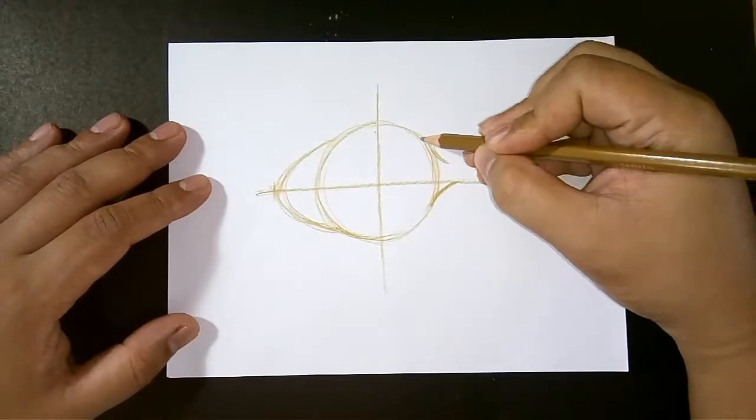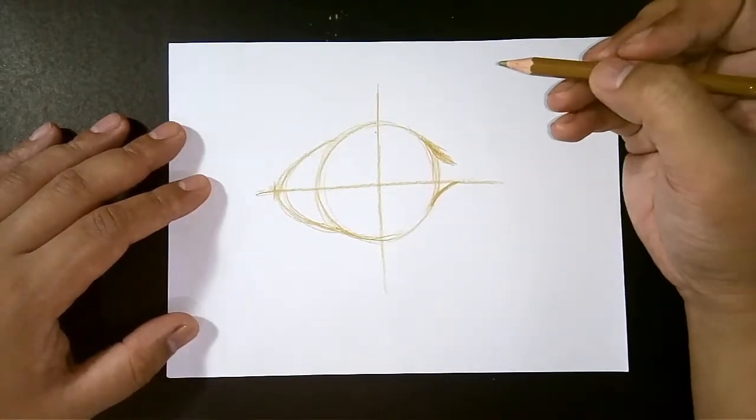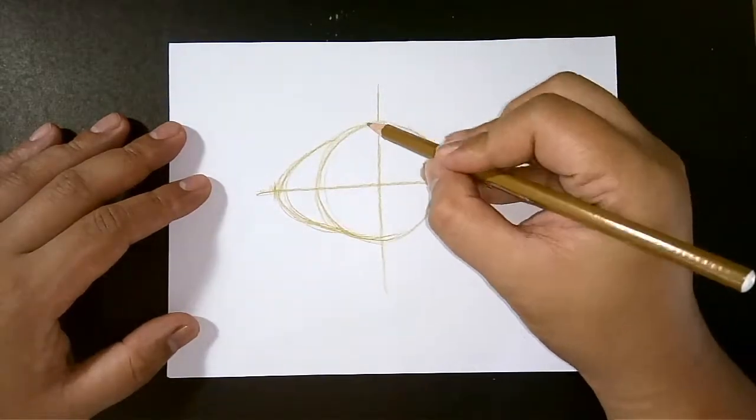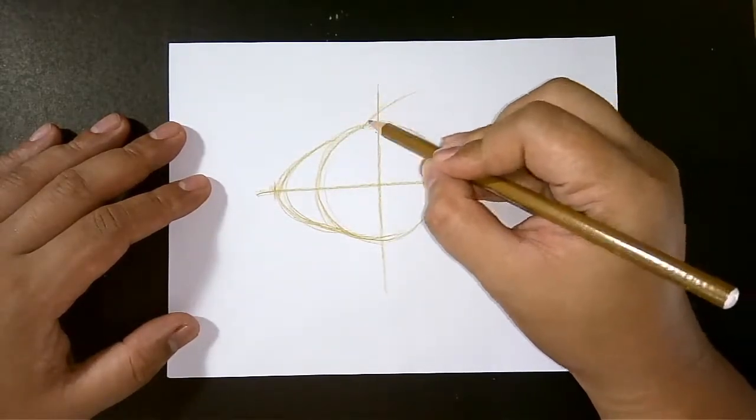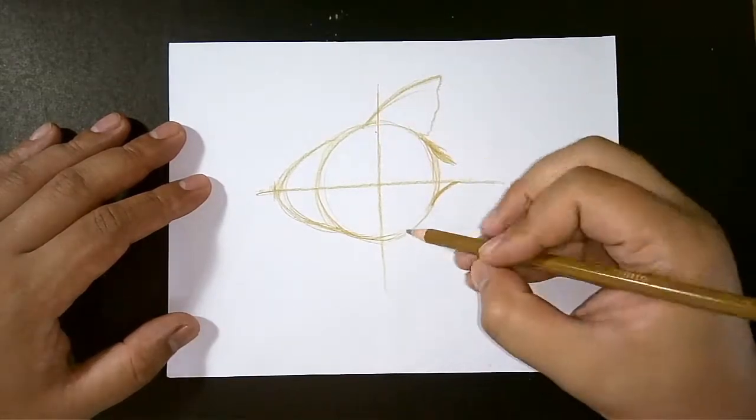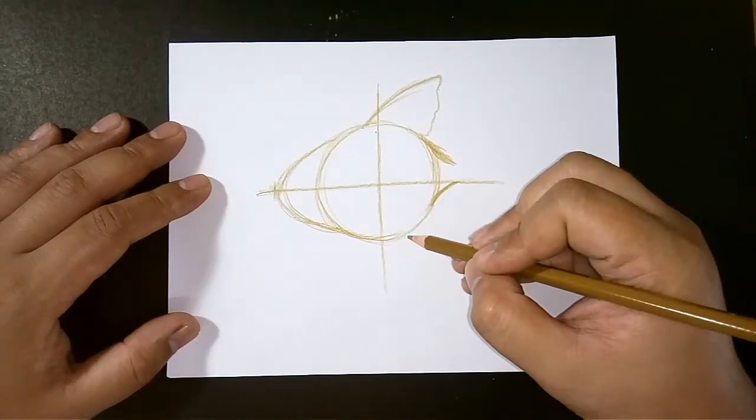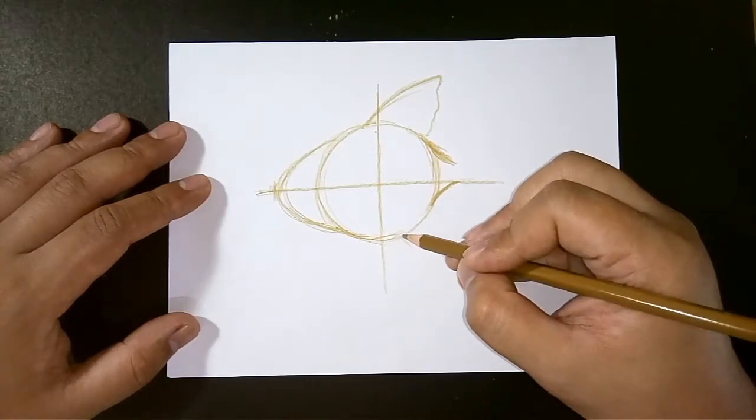All right, now we can add the tail and the fins. Take note of where and how I'm adding them in, and the guidelines will help you place them. And also, if you will notice, I place the fins on the right half of the circle.